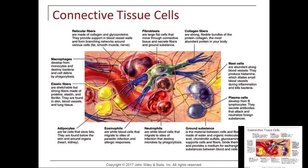Different types of fibers: elastic fibers, just like the word elastic, are stretchable yet very strong. They're made of proteins like elastin and fibrillin, and are found in the skin, blood vessels, and lungs. Reticular fibers are made of collagen and glycoproteins and provide support for blood vessel walls.